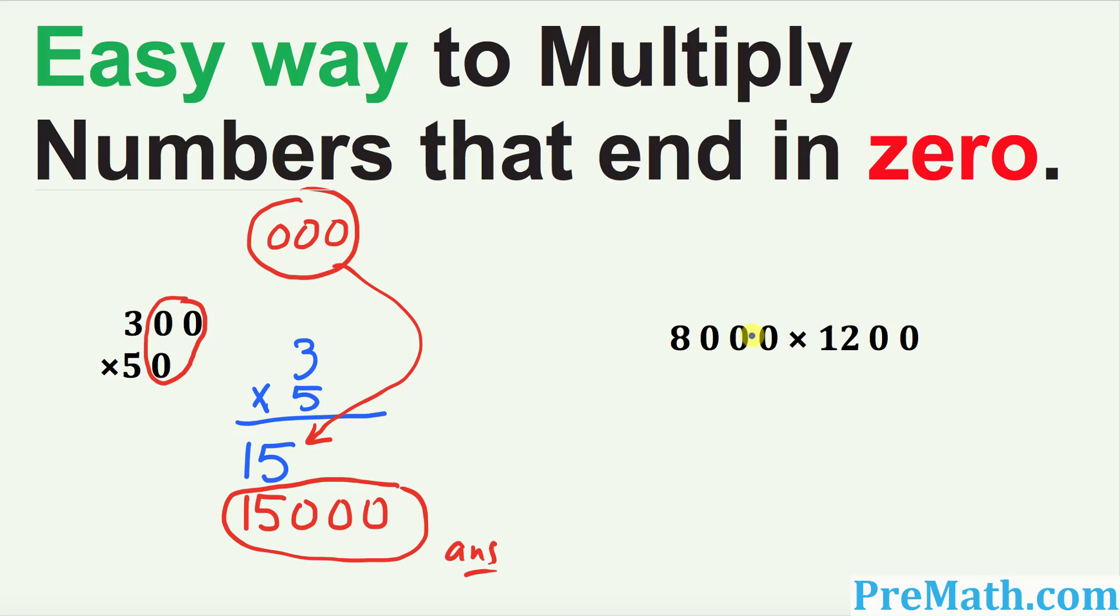Let's look at the next example. Once again, how many trailing zeros? For 8,000 there are three trailing zeros, and for 1,200 you have two trailing zeros at the end. So these three and two make five zeros.